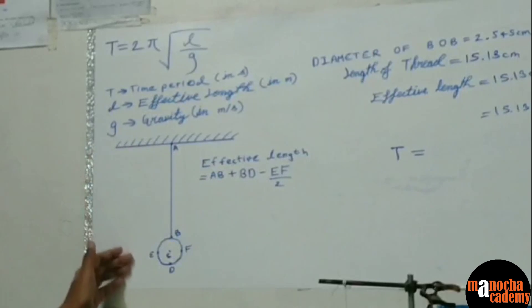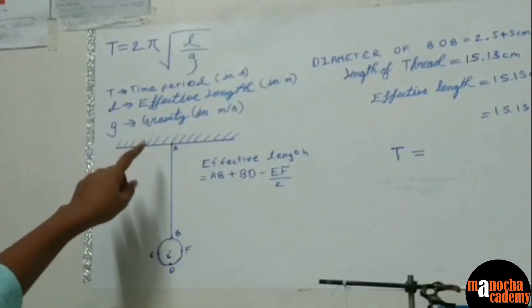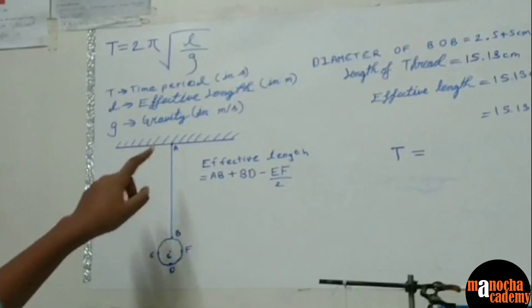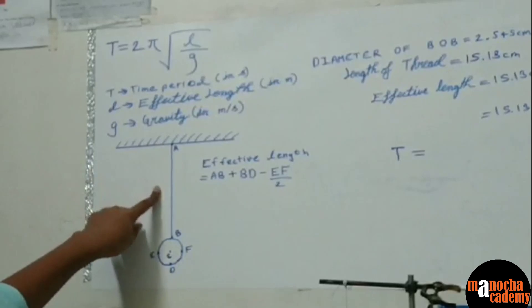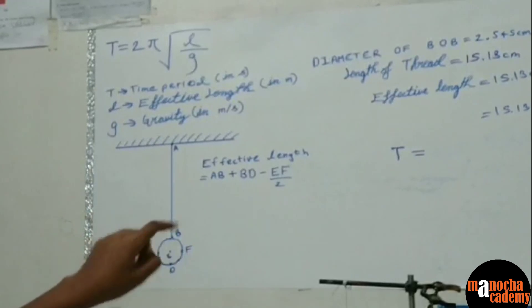This is the diagrammatic representation of the simple pendulum. So the point of suspension is A and the intersection of the string and the block is point B. The center of the block is point C.